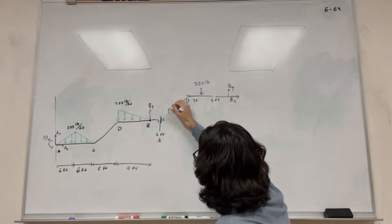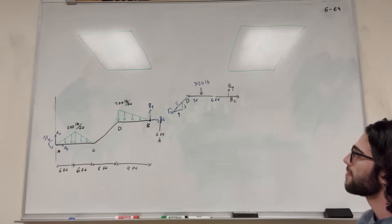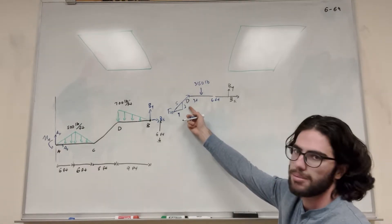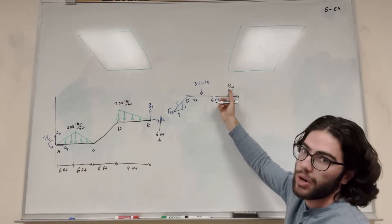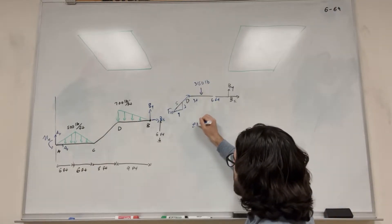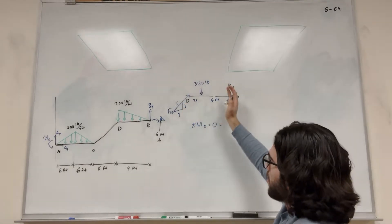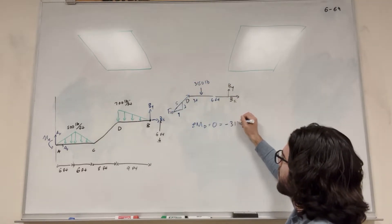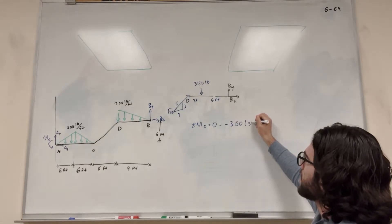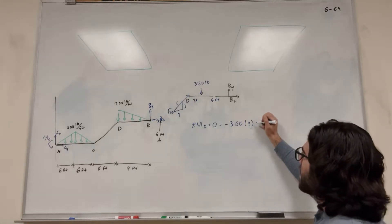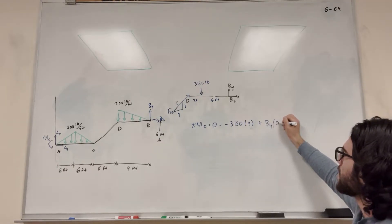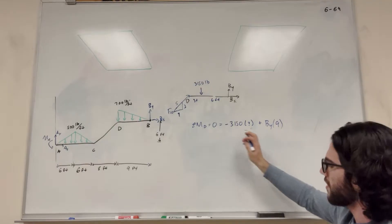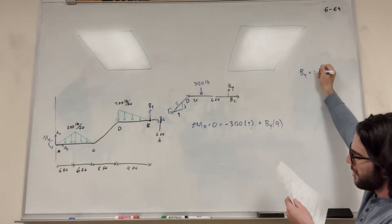Let's label this force CD because it's pin CD. Now we can take the moment around D. If we take the moment around D, that unknown force is not in the equation, and we only have one unknown: B of Y. Sum of moments around D equals zero. We have the 3,150 pound force pushing clockwise, so we subtract 3,150 times its distance of 3 feet. B of Y is pushing up, so we add B of Y times its distance of 9 feet. B of X doesn't contribute to the moment. Solving gives us B of Y equals 1,050 pounds.